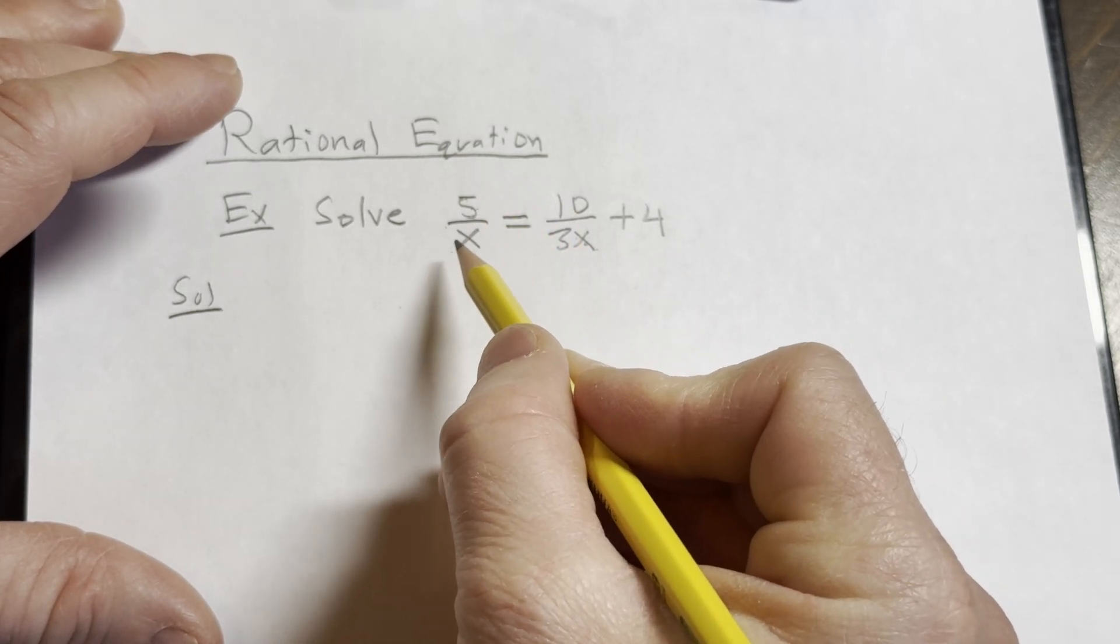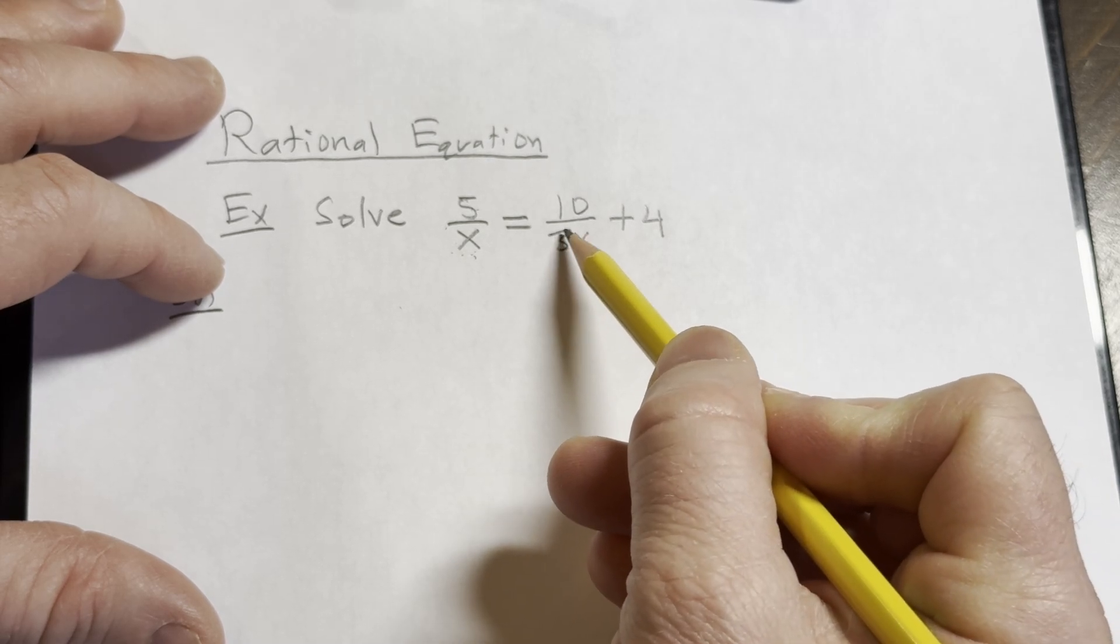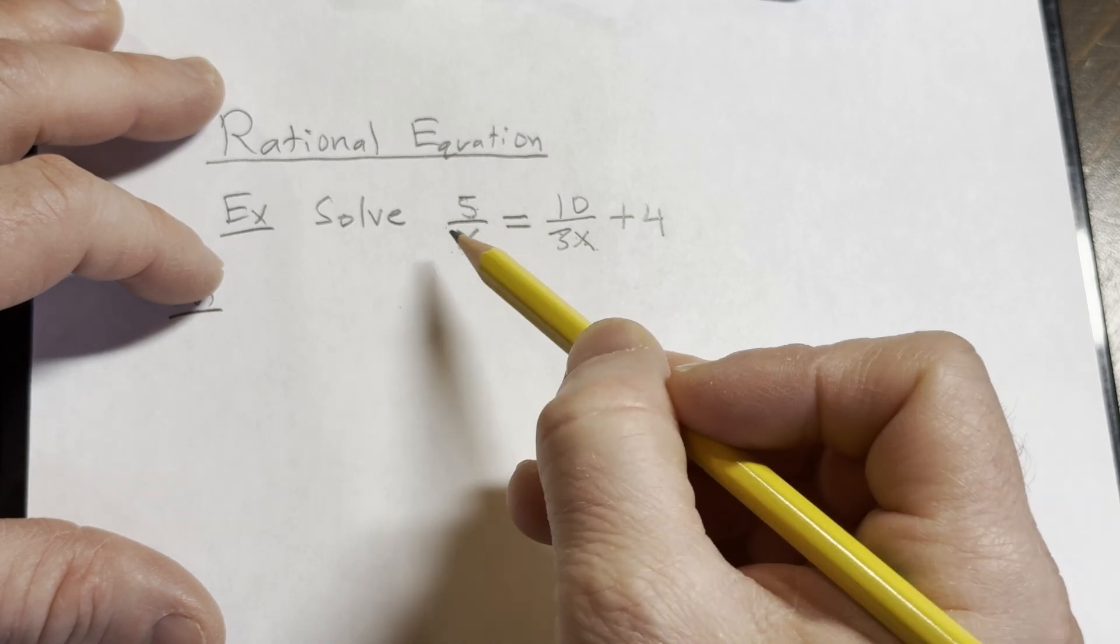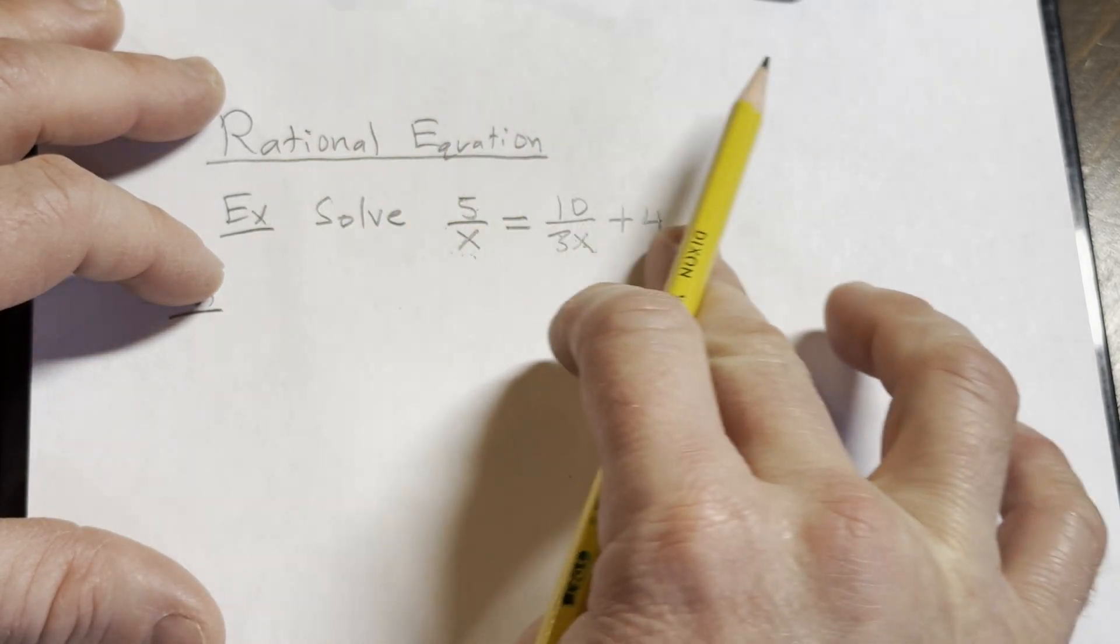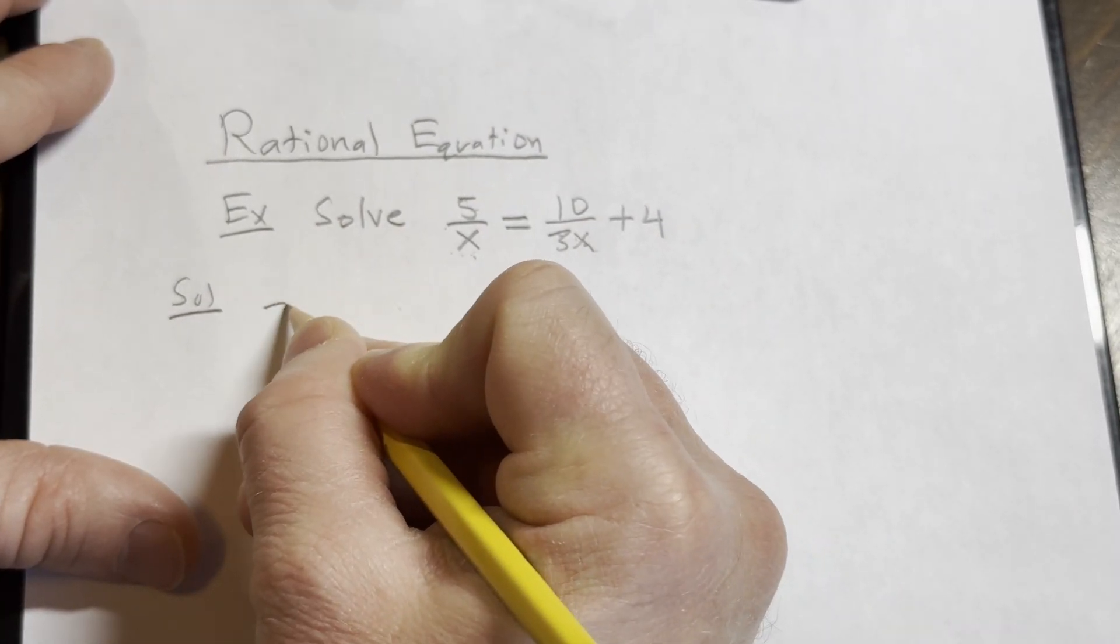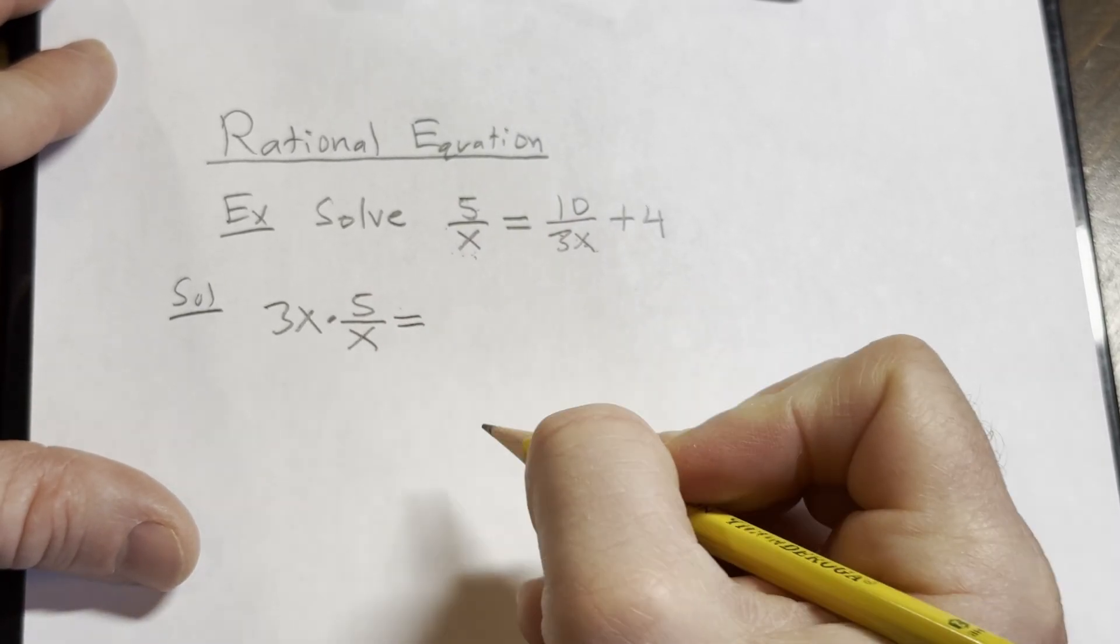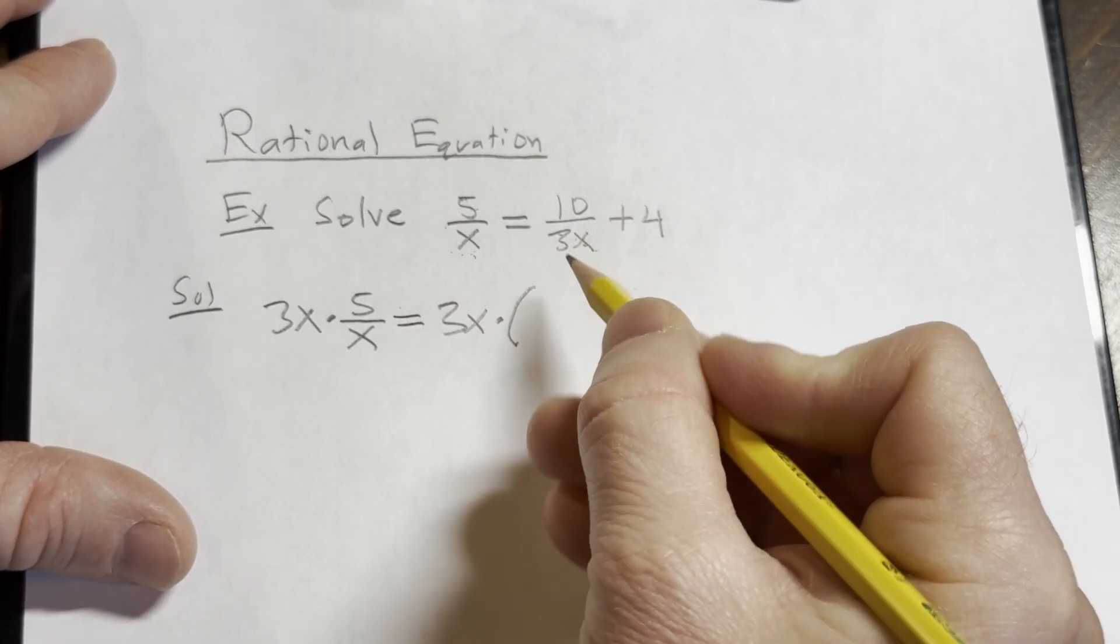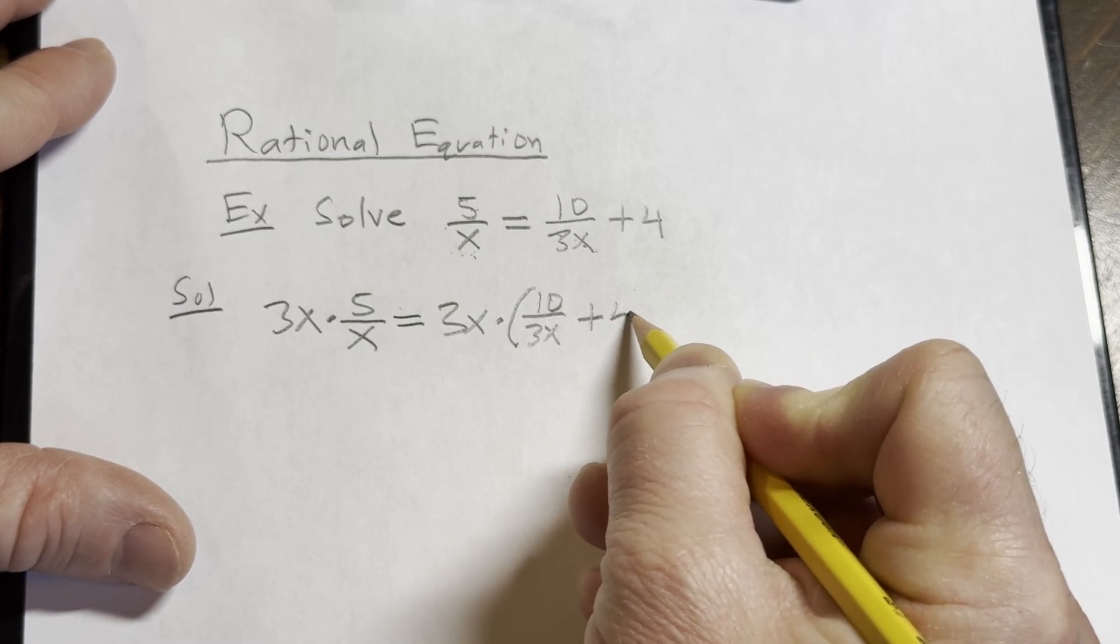To get rid of the x here, we can multiply this by x. But here we have a 3x, so we need to multiply by 3x to get rid of the 3x. But check this out. If we multiply by 3x, we also get rid of the x. So let's use 3x and let's multiply both sides of this equation. Because remember, what you do to one side, you do to the other. So 3x times 5 over x equals, and then here we're going to have 3x times, and then parentheses, 10 over 3x plus 4.